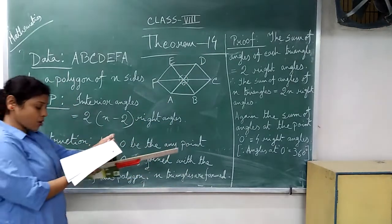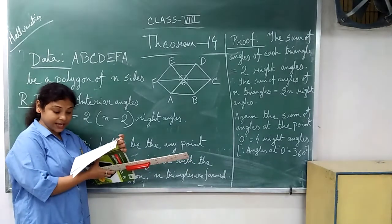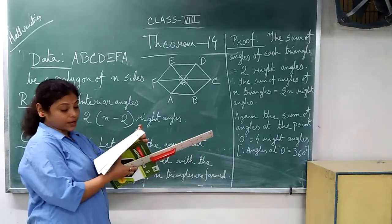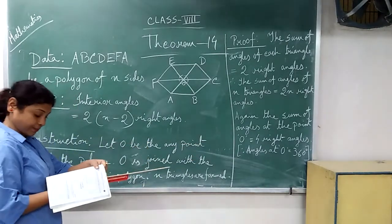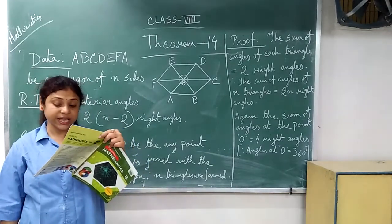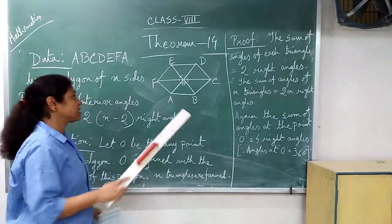Theorem 14 states that the sum of the interior angles of a polygon of n sides is equal to 2 into n minus 2 right angles.